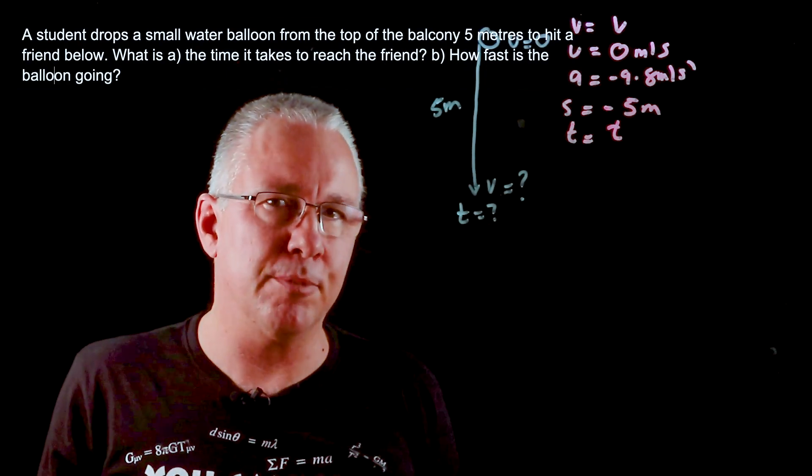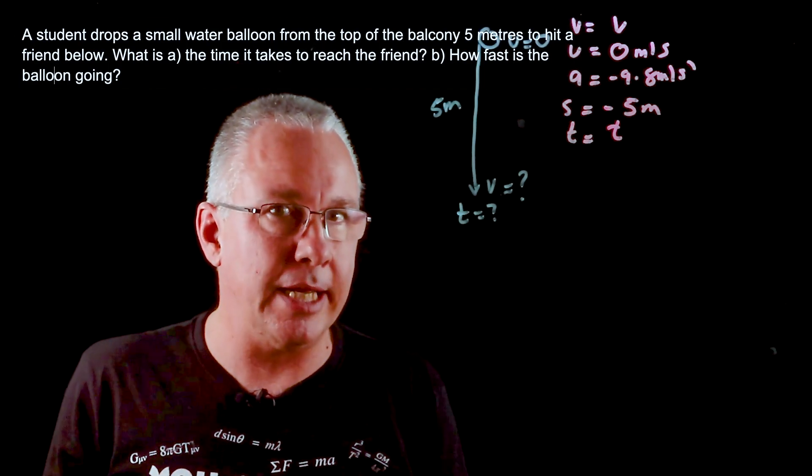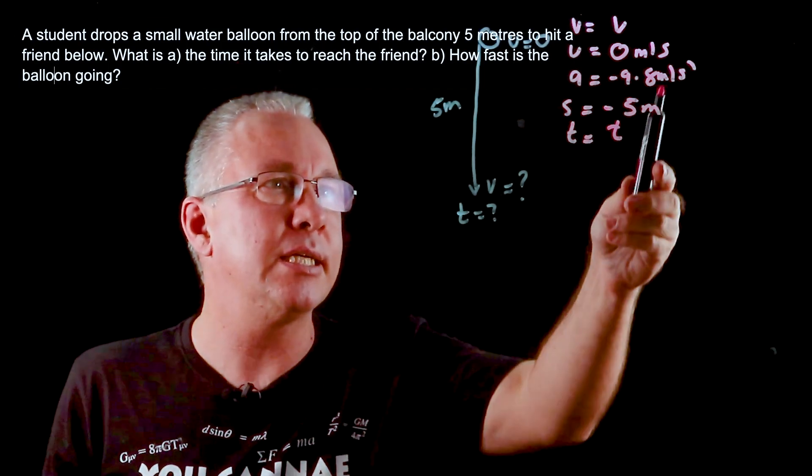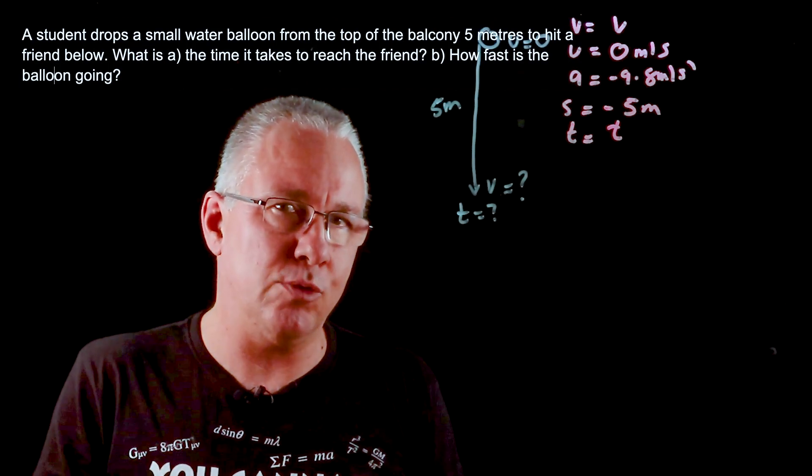We have five variables. All the equations of motion have four variables, so you need to know three to work out any remaining one. We have three variables that we know, so now we can solve for each one of them.